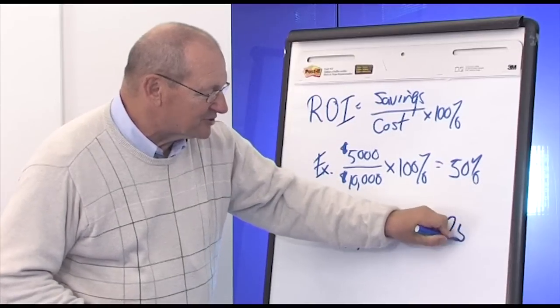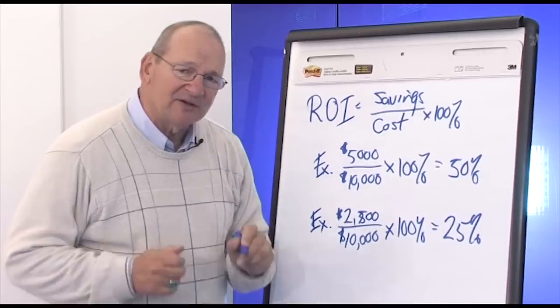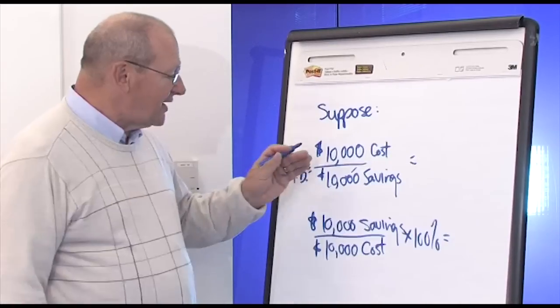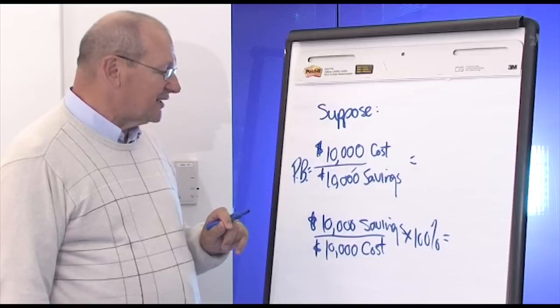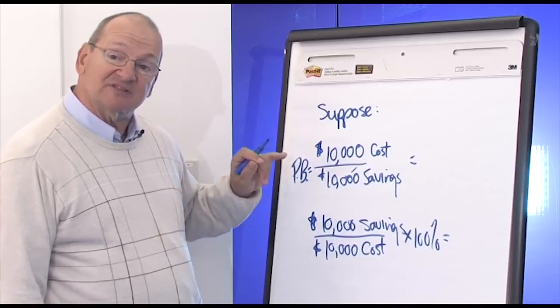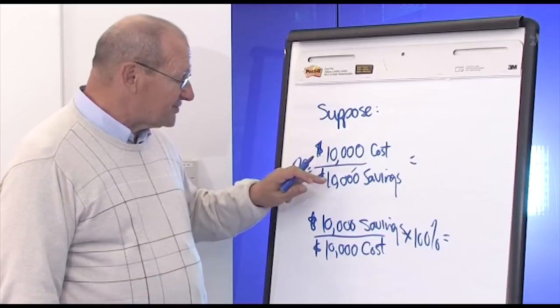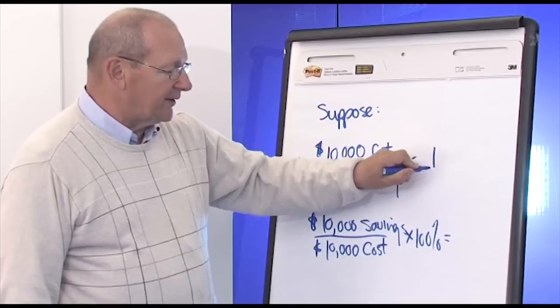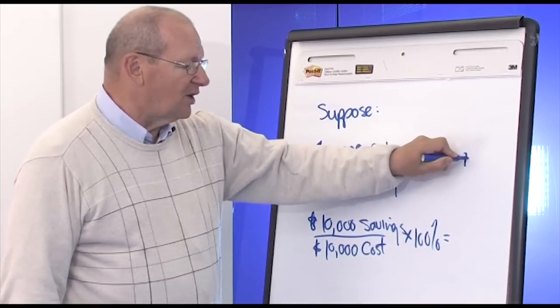Very good, 25%. I think you're getting the idea, but let's do another example. Imagine a project with a $10,000 cost and in the very first year you have $10,000 savings. Divide $10,000 by $10,000. How many years is that? Right, one. Or 12 months.